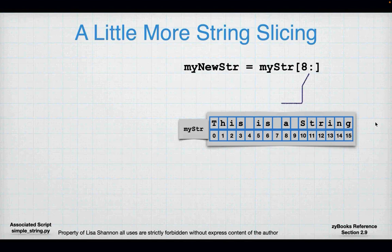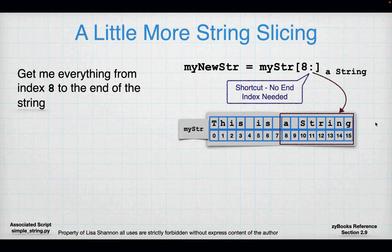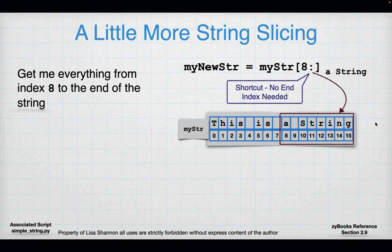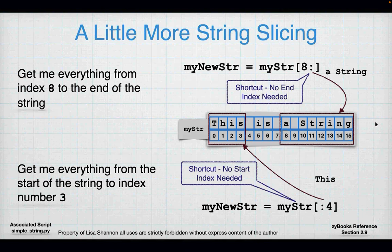There are handy shortcuts for slicing. 'my_str[8:]' means from index 8 all the way to the end — you don't have to worry about figuring out the length. Just put the colon after the start index and it gets everything to the end of the string. The opposite — 'my_str[:4]' — gets everything from the beginning up to index 3, so indices 0, 1, 2, and 3. Those are two shorthands for slicing that make life pretty easy.